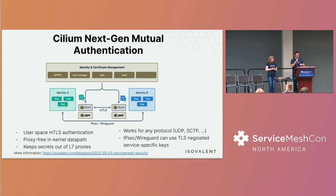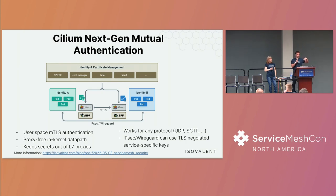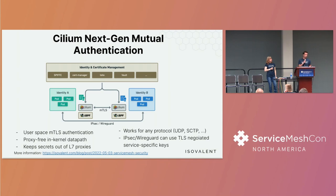This approach splits the authentication piece from the payload and data path. Authentication happens through a regular MTLS handshake, integrating with SPIFFE and SPIRE manager, doing mutual authentication using per-service certificates. Then instead of carrying the actual payload in that MTLS connection, we carry data through the network directly using the keys negotiated via the MTLS handshake — using IPsec and WireGuard. We gain the benefits of both models: strong MTLS mutual authentication, while supporting any network protocol without introducing any proxies. Encryption and mutual authentication can be established network-wide without requiring proxies.